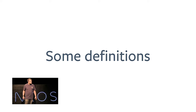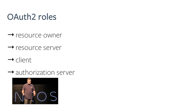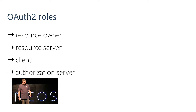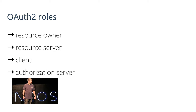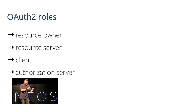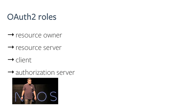OAuth 2 defines four roles. First, the resource owner — this is the user who is actually using your client application and grants access to their sensitive data. Then you have a resource server that delivers sensitive data and must check access tokens for validity. Then the client — a difficult term in OAuth 2 because the client is the application using OAuth 2, not the person sitting behind the computer. That's very important. And the last role is the authorization server, which handles credential checking, token management, and all related tasks.